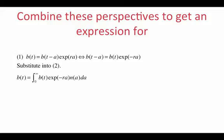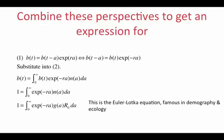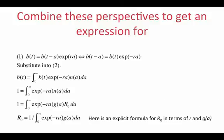To derive the Euler-Lotka equation, we rearrange equation one by dividing both sides by E to the RA, then substitute into equation two to obtain an expression with B of T on both sides. Dividing both sides by B of T leaves 1 on the left and an integral involving N of A on the right, which we can rewrite since N of A is just G of A times R0. In either of these two forms, we have the Euler-Lotka equation, well known in ecology and demography. Finally, dividing through by the integral leaves R0 by itself as an expression relating R0, the growth rate, and the serial interval distribution G of A.